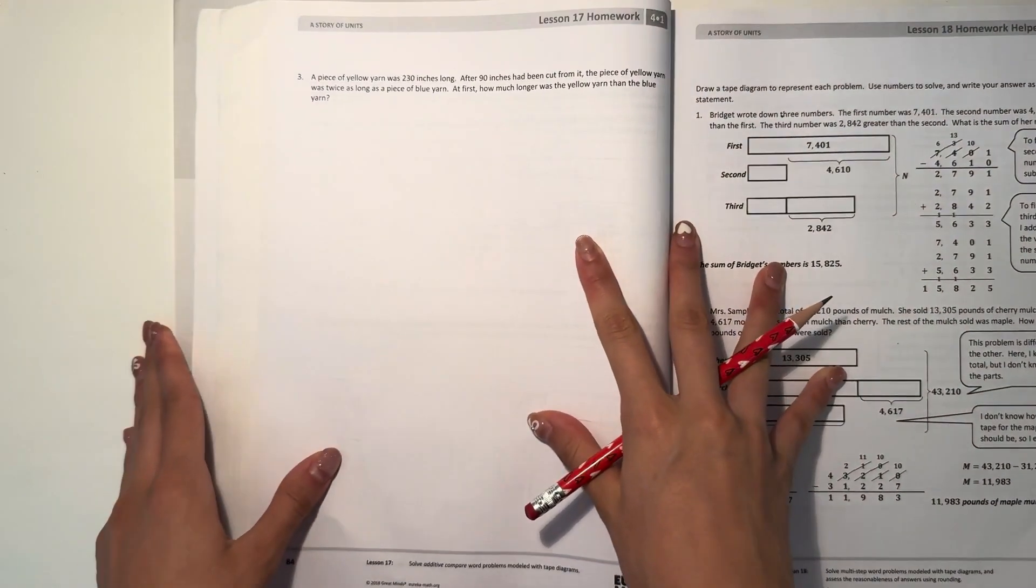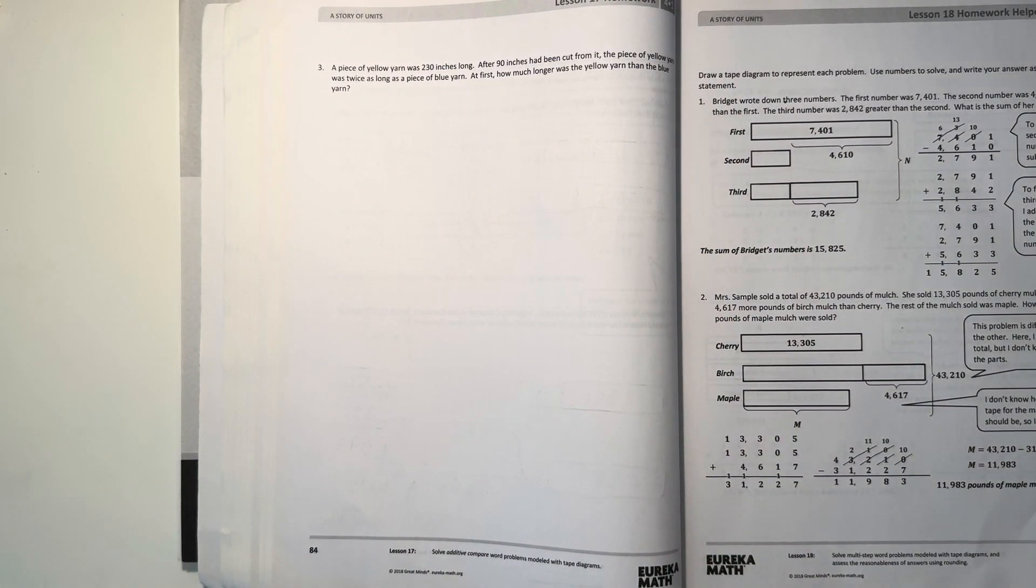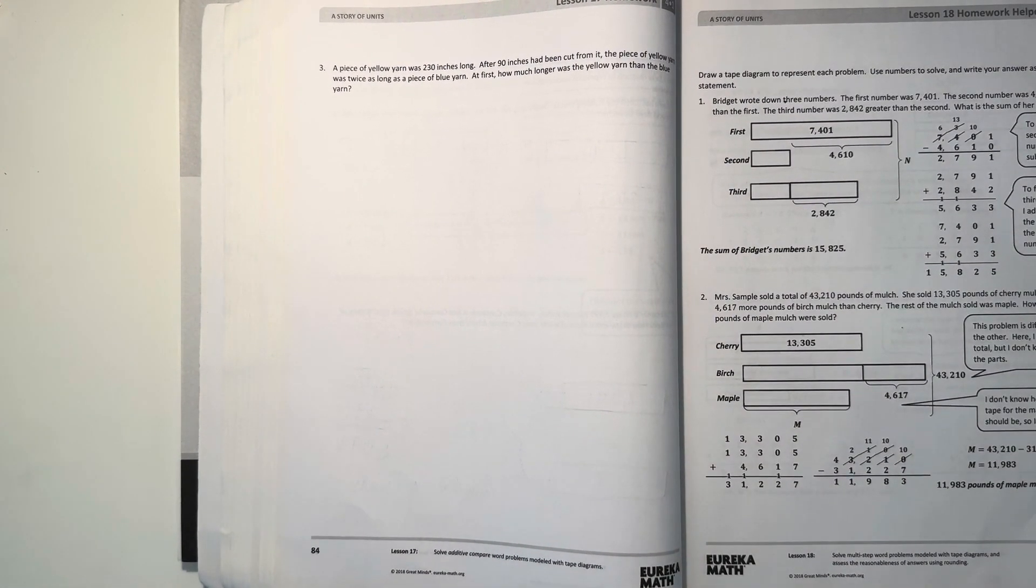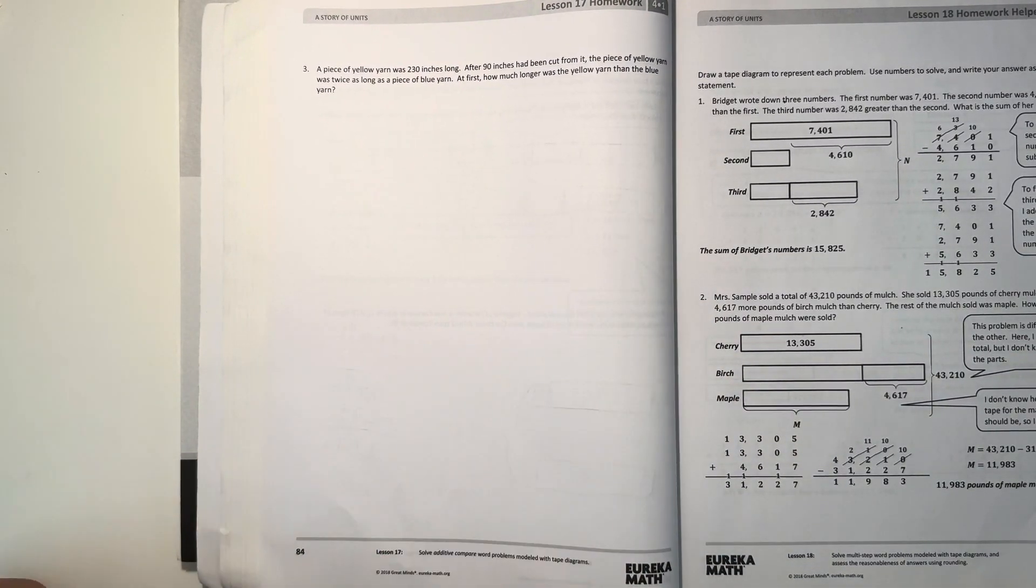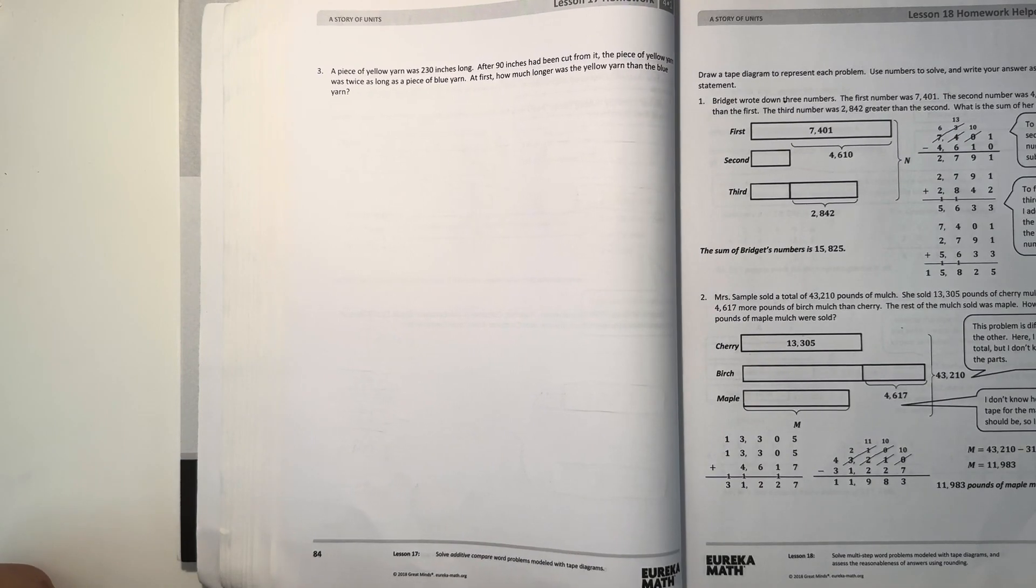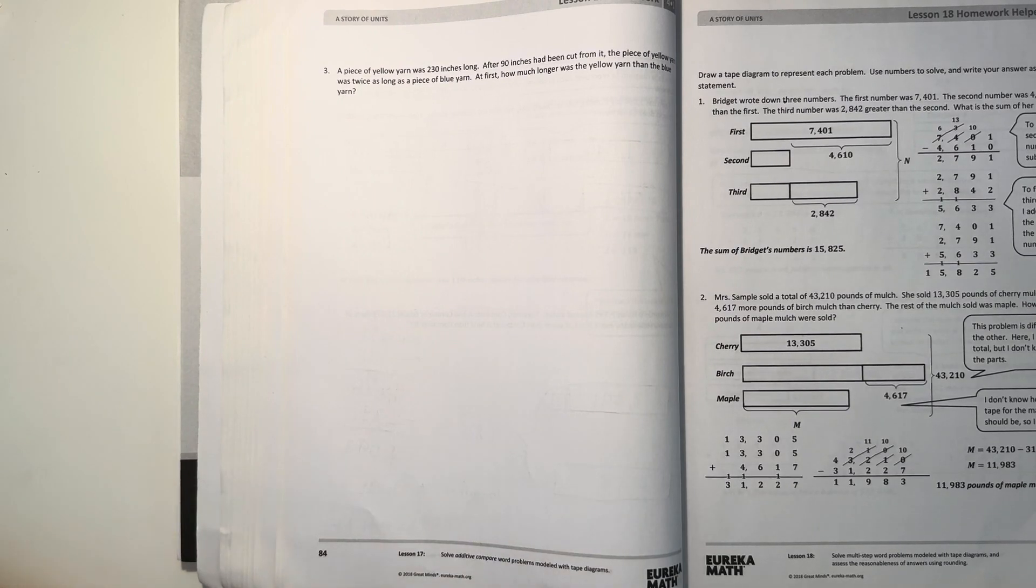All right, next page. A piece of yellow yarn was 230 inches long. After 90 inches had been cut from it, the piece of yellow yarn was twice as long as the blue yarn. So let's see.